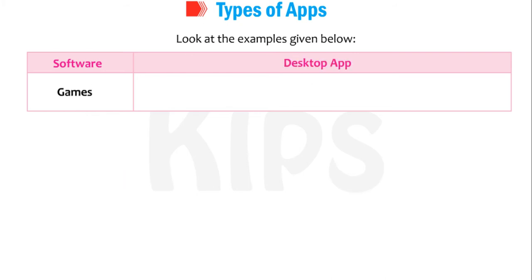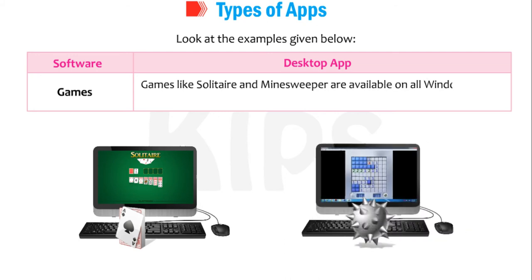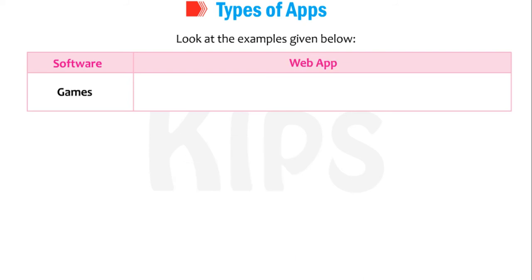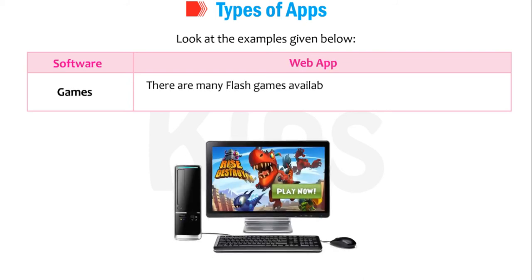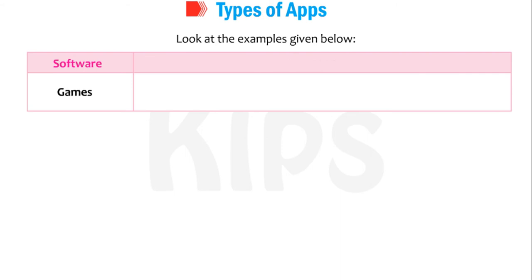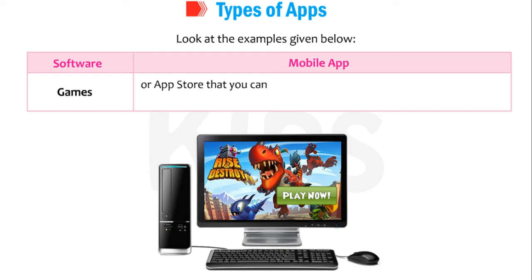For Games: desktop games like Solitaire and Minesweeper are available on all Windows-based computers, and other games can also be downloaded for use on desktops and laptops. As web apps, there are many Flash games available online that you can play for free or by paying a small fee — Power Cricket Challenge, Online Snooker, and Fortnite are examples of web-based games. Similarly, many mobile games are available on the Play Store or App Store that you can download and play for free or by paying a small fee.